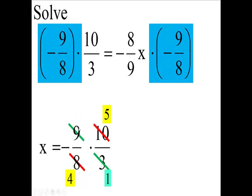And 3 divided by 3 is 1. So I end up with minus 3 times 5, and 4 times 1, so we're getting a minus 15 over 4.